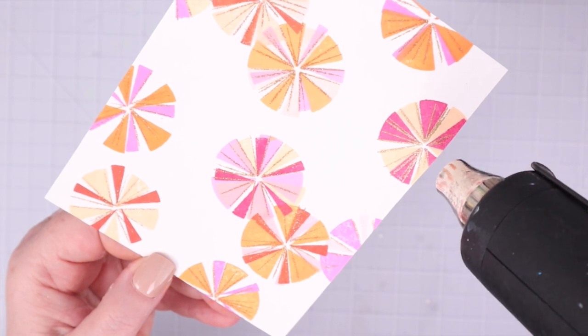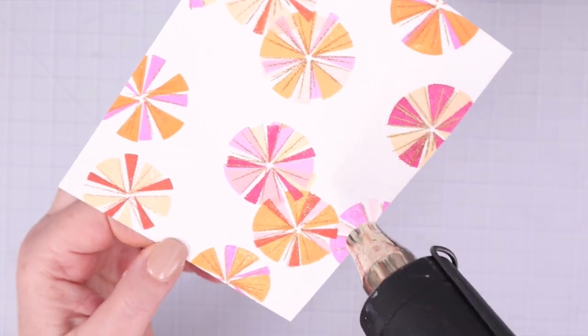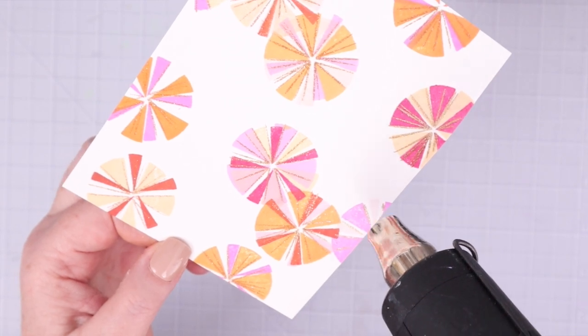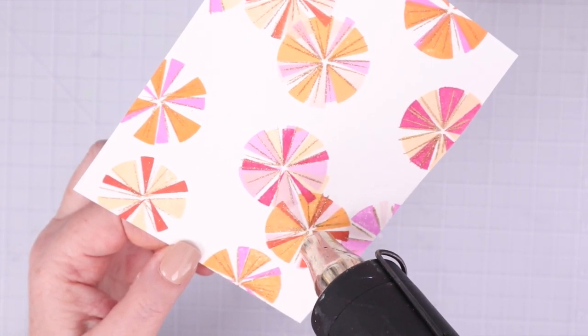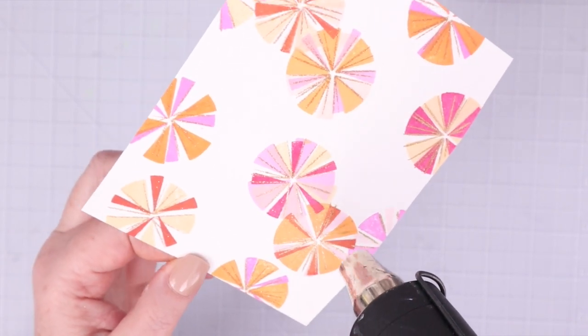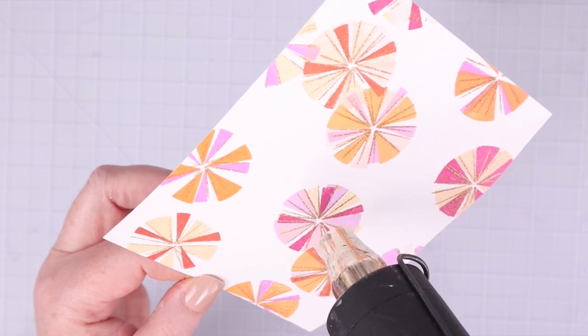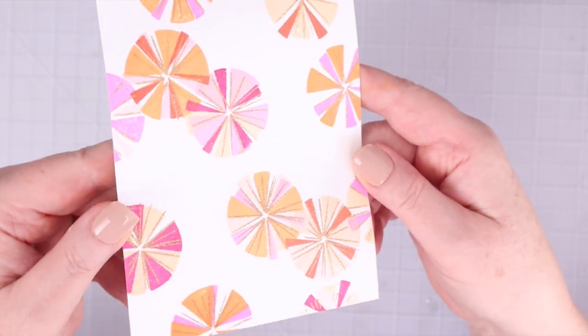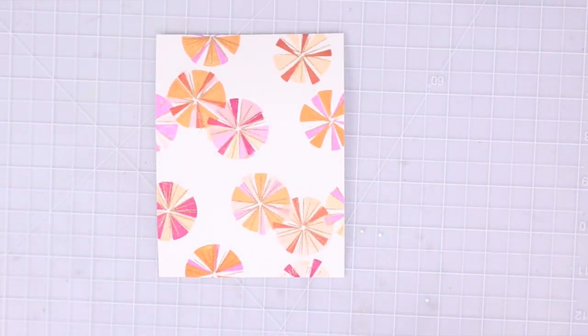Once I had stamped it in Versamark ink, I poured Imagine Crafts embossing Sparkling Champagne embossing powder on top, and then I used my heat tool to melt the embossing powder. I love how you can see the embossing powder change when it melts. It turns glittery and shiny. It's such a pretty unique color.